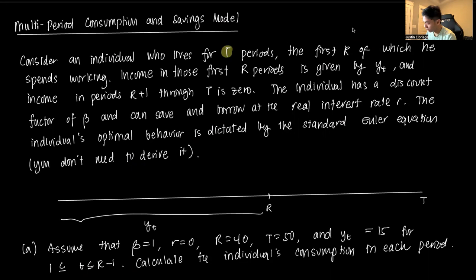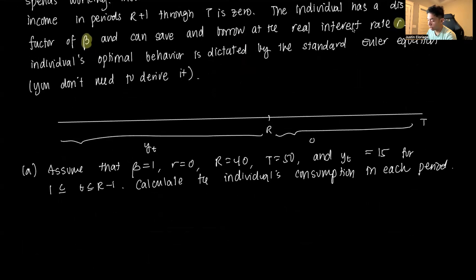After that, the income in periods R+1 through T is zero. The individual has a discount factor beta and can save and borrow at real interest rate R. The individual's optimal behavior is dictated by the standard Euler equation. Let's go to letter A.